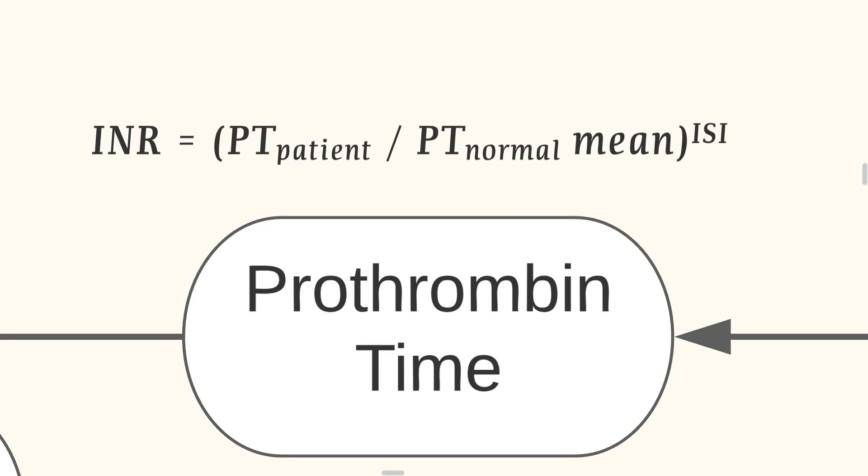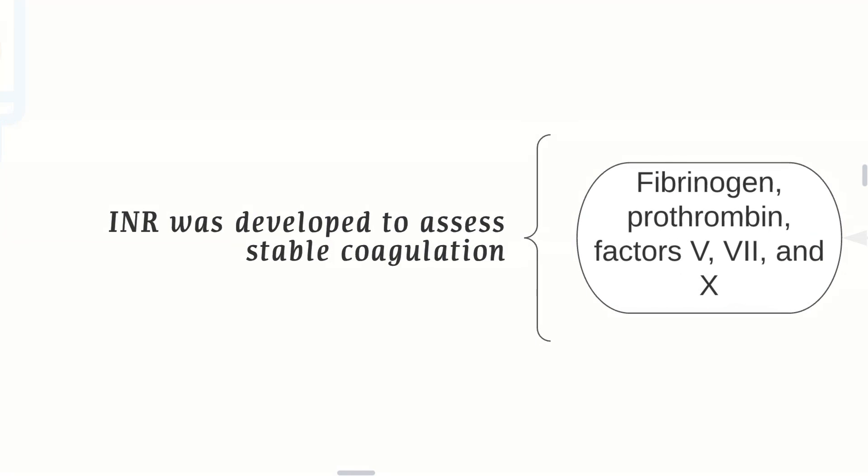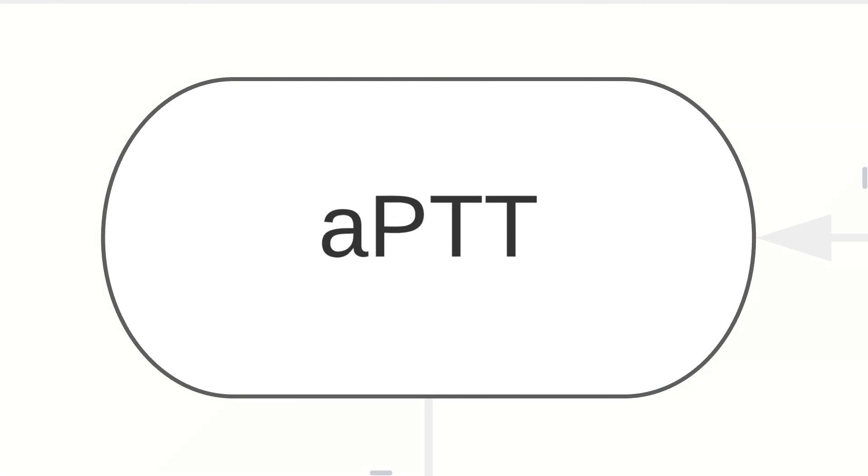Then you can do prothrombin time which is one of the more important screening tests. The INR equation is shown above as a reference. INR was developed to assess stable coagulation and assessed would be fibrinogen, prothrombin, factors 5, 7, and 10 by PT.